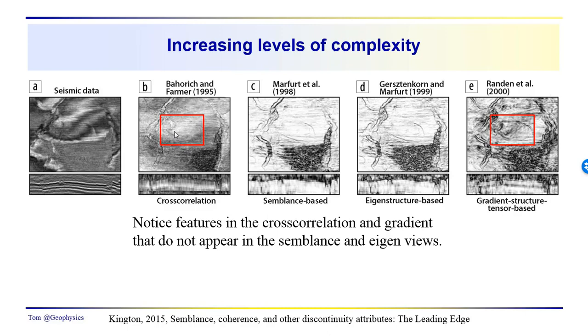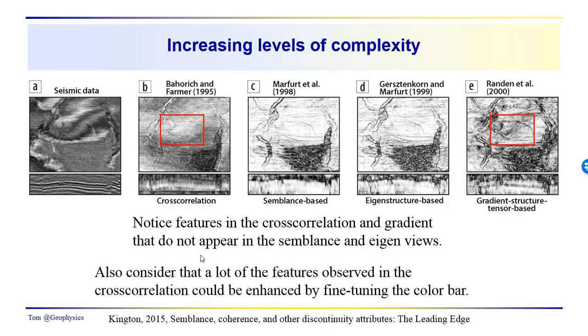We don't really see this channel coming out here in the eigenstructure, the semblance-based approaches, but we do see it in the gradient and the cross-correlation. Some other things to notice are that the gradient looks like, and I haven't really checked into this in detail, but it looks like we have these discontinuities over here, but instead of a single discontinuity, we have a kind of an increase and a decrease and an increase and a decrease, and that might be typical of something that you'd see if you took the derivative. So just consider that a lot of the things that you see in here, you don't see in all of them quite as well. All of them bring out the edges. I really do like this cross-correlation view here of Bohorich and Farmer. I can see a lot more here.